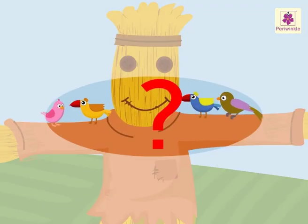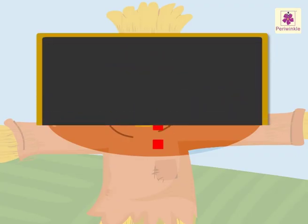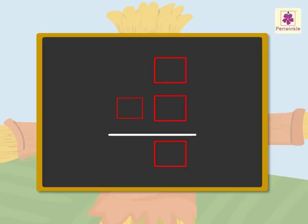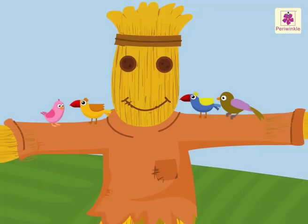How many birds are left on the scarecrow? Let us see what information we have and what we have to find out. Information: nine birds sitting on the scarecrow, and five birds flew away. We have to find out how many birds are left on the scarecrow. 'How many are left' means we have to subtract. So, nine birds minus five birds equals four birds left. Hence, there are four birds left on the scarecrow.